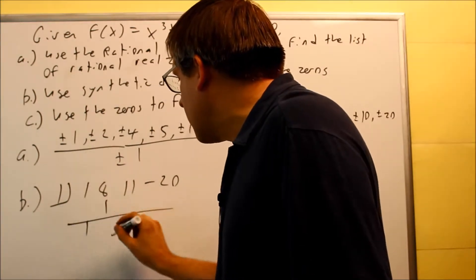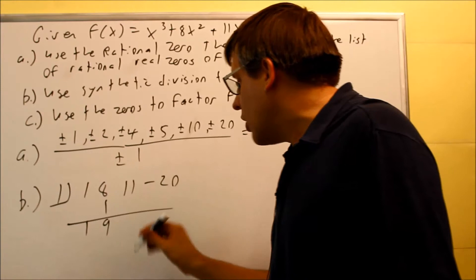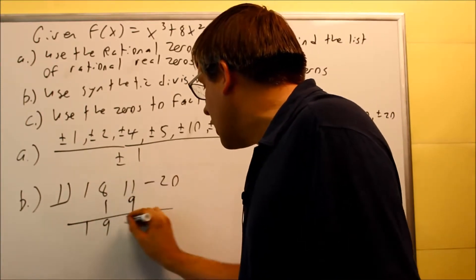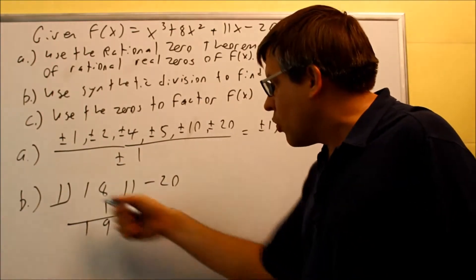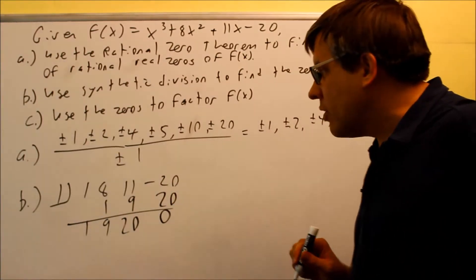Drop down the one. One times one is one. Add those together you get nine. Multiply. One times nine is nine. Add it together we get twenty. Twenty times one gives you twenty here. When you add that together you get a zero for your remainder.